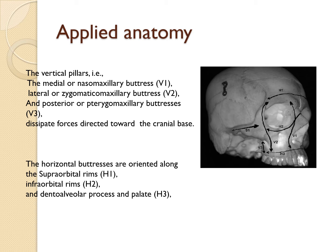The relevant anatomy in these midface fractures — the fractures happen on the facial buttresses. The facial buttresses are divided into two: vertical and horizontal buttresses. These are the areas where the fracture sites can mostly be seen. The vertical buttresses are mainly the nasomaxillary, zygomaticomaxillary, and vertical mandible — these are the four buttresses seen in the vertical region: nasomaxillary, zygomaticomaxillary, pterygomaxillary, and the mandible.